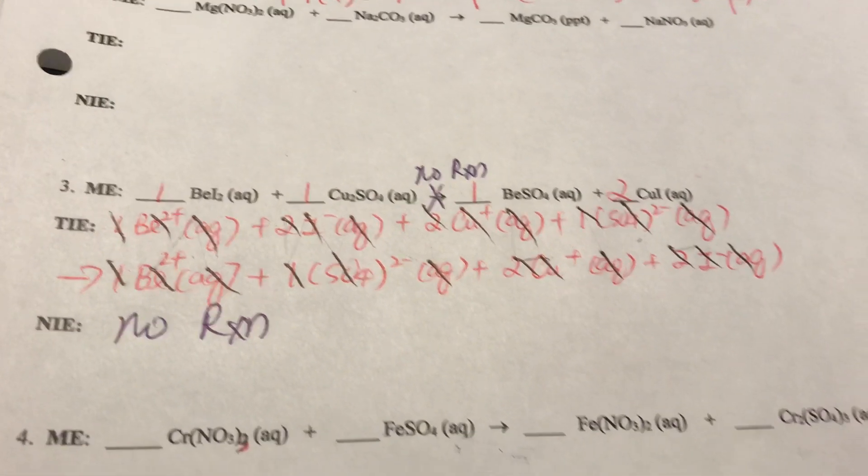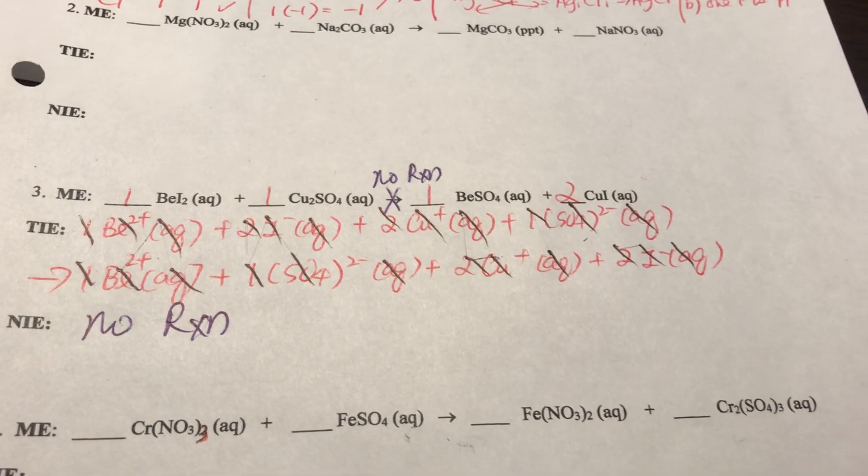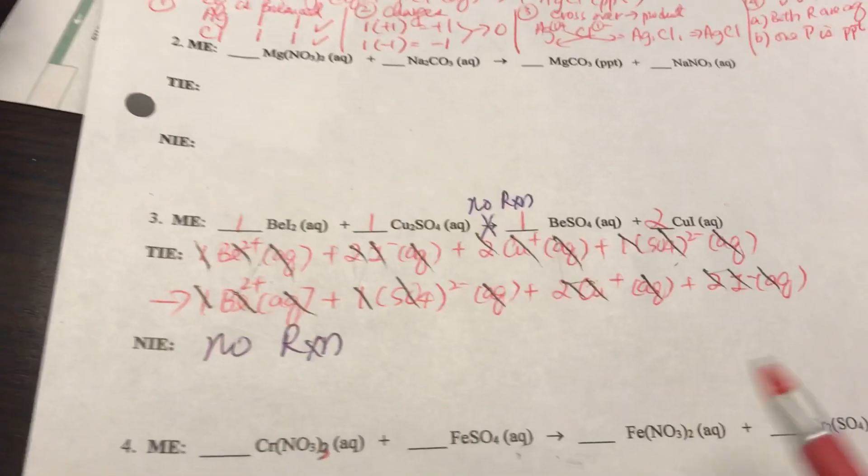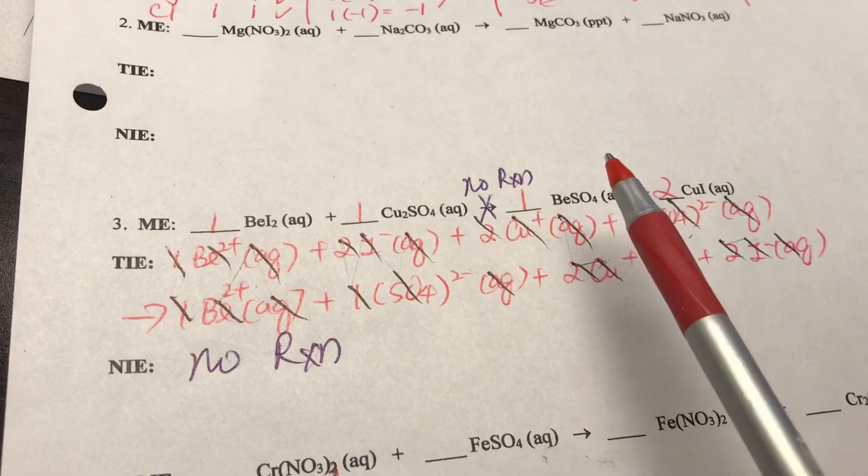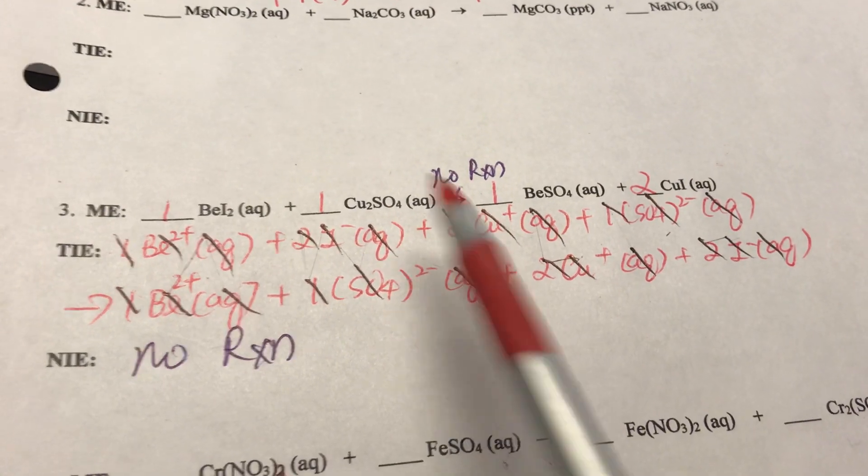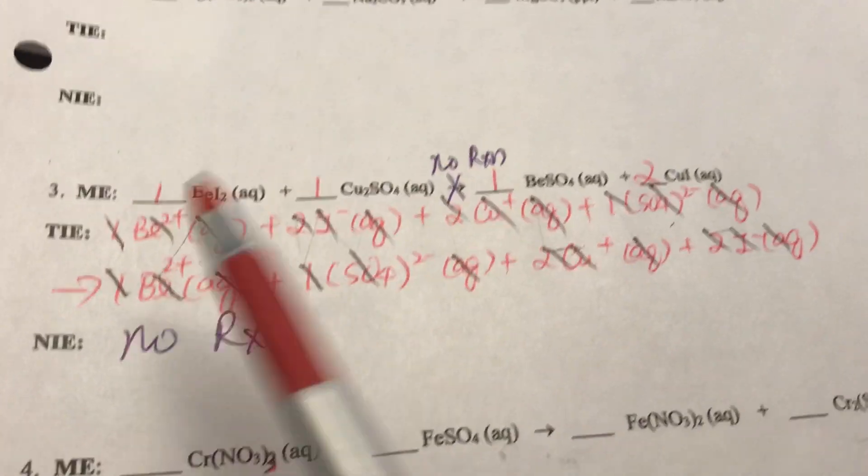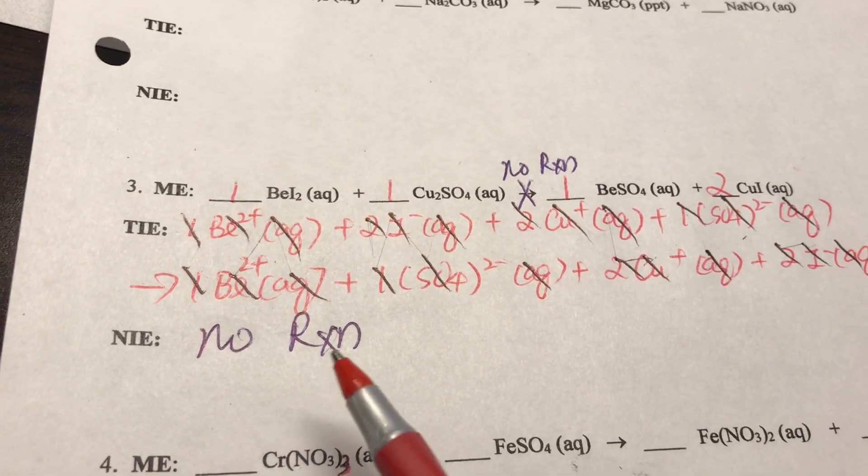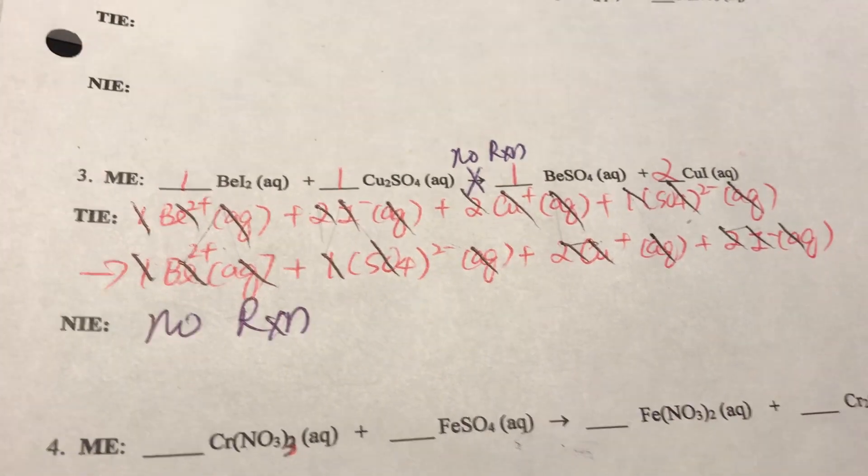Now here you still want to show the total ionic, even though you know that there's no reaction. The total ionic equation here tells me what is inside the beaker before and after reaction, so you still have to show me. But then on the net ionic, because they are cancelled, you can just write no reaction.